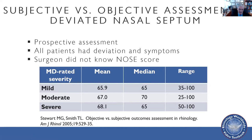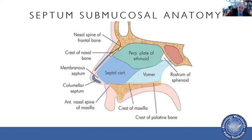Now let's talk about addressing nasal septal deviations. From a sagittal view, you've got the quadrangular cartilage, the perpendicular plate of the ethmoid bone, and the vomer bone — all coming together underneath the mucosa. You've got your membranous septum, a portion of the lower lateral cartilage, and the upper lateral cartilages demonstrated here. The septum attaches to the nasal bone, to the upper lateral cartilages, to the crest of the maxilla, the crest of the palatine bone, etc.